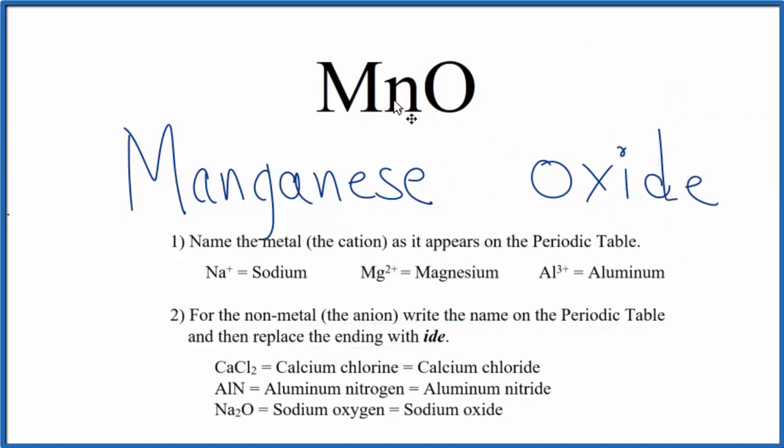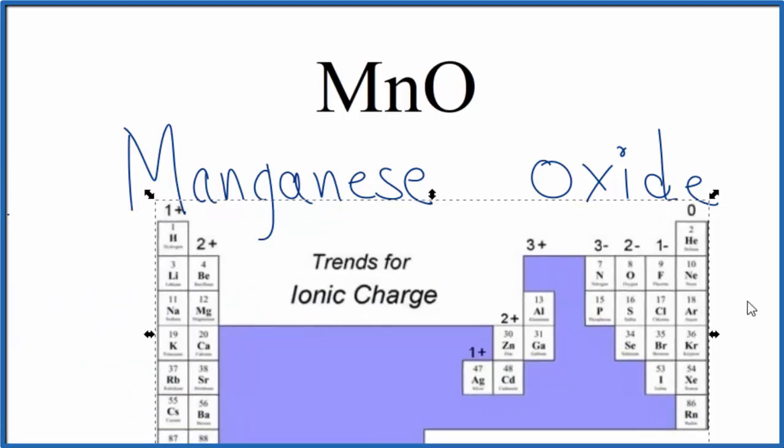But Mn, manganese, that's a transition metal. It can have a different charge depending on what it's bonded to. Here it's bonded to the oxygen. So if we went to the periodic table, we looked up oxygen. That's right here. That forms two minus ions. So we could say the oxygen ion here, that's going to be two minus.